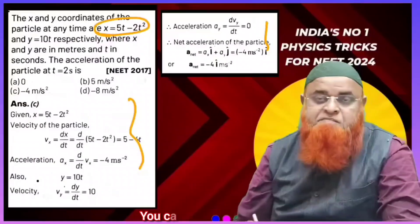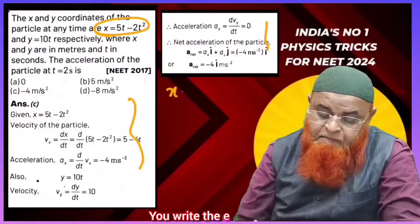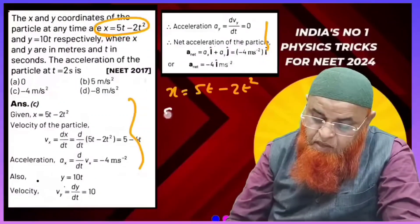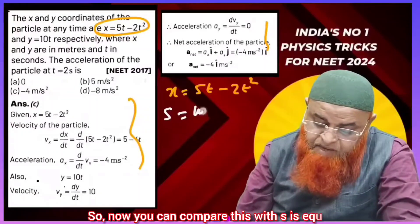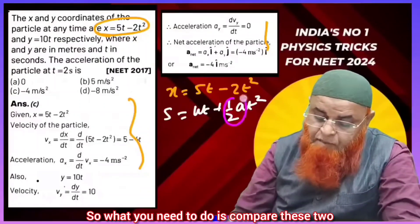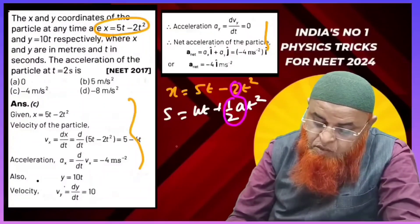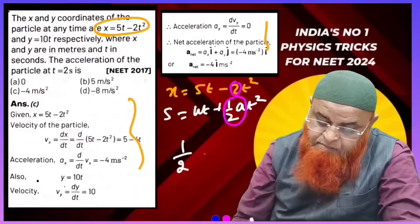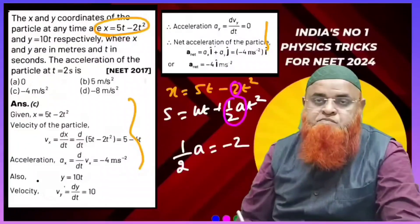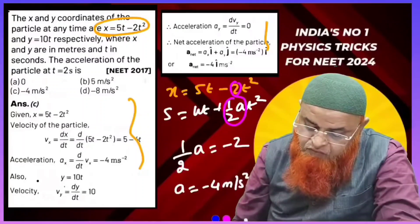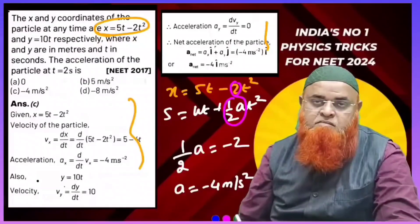You can see this equation. Write the equation and compare: 5t minus 2t squared. Compare this with s = ut + ½at². You need to compare these two, so you can compare half·a with minus 2. Then you will get directly a = minus 4 meters per second squared.